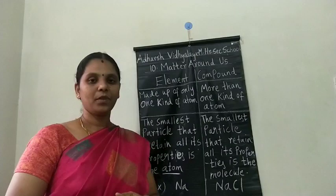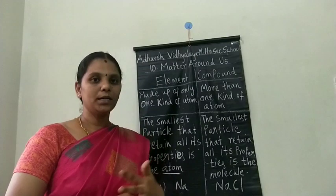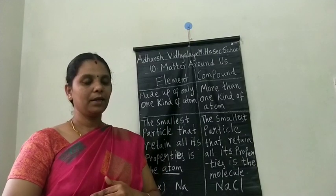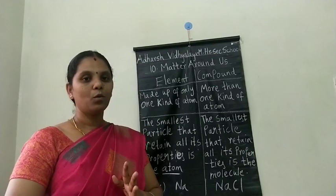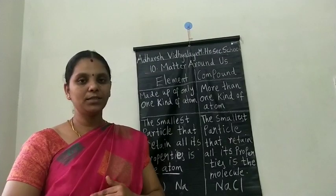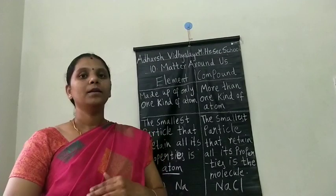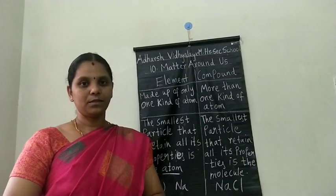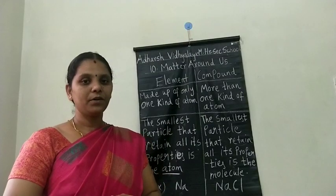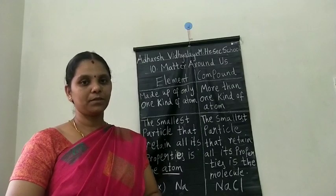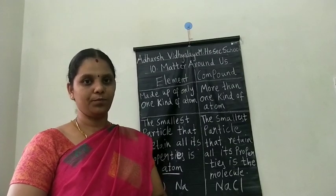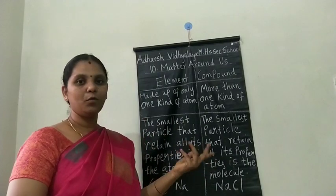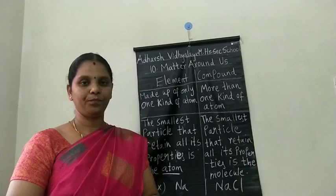In this session, we have learned what an element is and what a compound is. Matter is classified into two types: pure substance and impure substance. Impure substance is otherwise called a mixture. Pure substance is further classified into element and compound. Thank you.